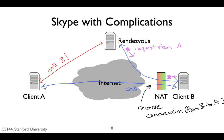Since client A isn't behind a NAT, this connection can open normally. This is called a reverse connection because it reverses the expected direction for initiating the connection — client A is trying to connect to client B, but instead client B opens a connection to client A. This happens in Skype because Skype clients are typically personal machines. It's rare for publicly accessible web servers to be behind NATs, since you want the server to be accessed by everyone. Personal computers, however, are often behind NATs for security and other reasons, so Skype has to incorporate some new communication patterns to work around them.